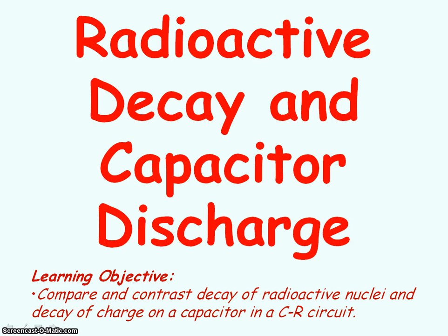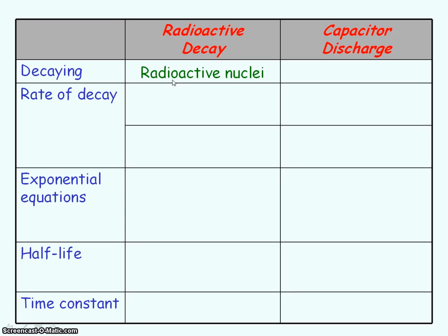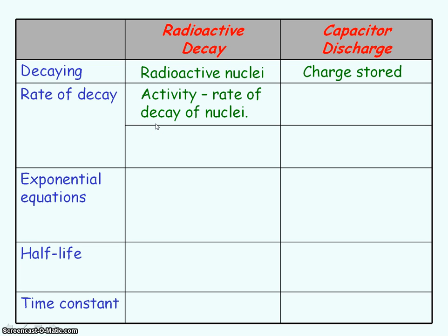We're going to be comparing radioactive decay with the decay of charge on a capacitor. In radioactive decay, it is the radioactive nuclei that are decaying, whereas during the discharge of a capacitor it's the charge stored that is decaying. The rate of decay for radioactive decay is the activity, which is the number of radioactive decays per unit time, and the rate of decay for capacitor discharging is the current, which is the rate of decay of charge.